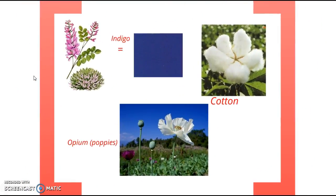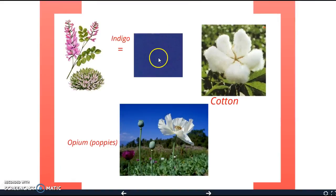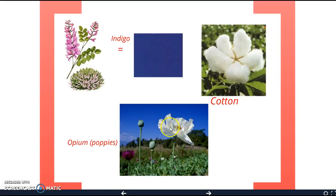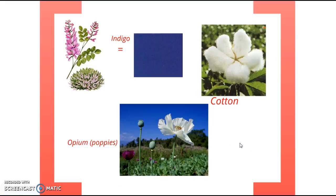Here we have pictures: this is indigo, this is the color indigo, this is cotton — which we've actually seen in class — and these are poppy flowers. Sometimes they're red; they're a very pretty flower. The seeds appear on things you eat, like buns and muffins, but opium is a super highly addictive drug that makes you pretty much worthless when you're taking it.